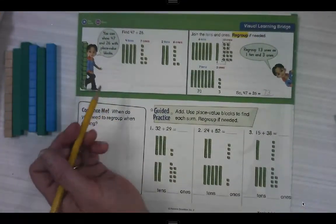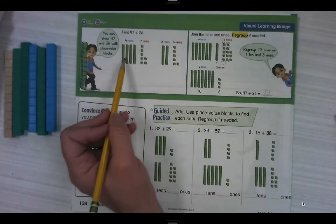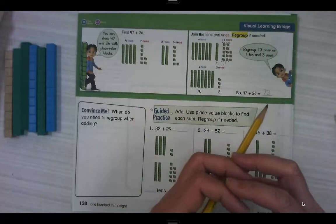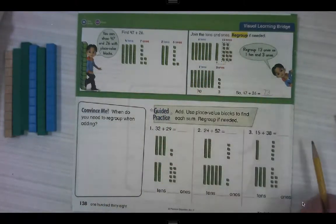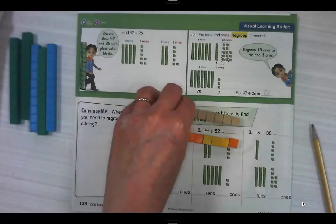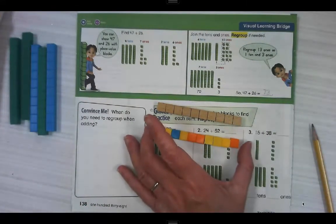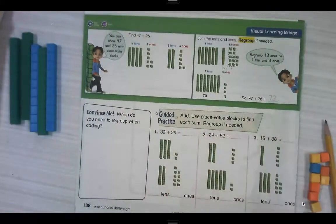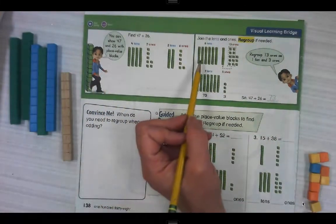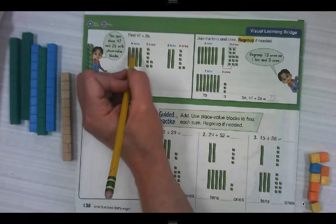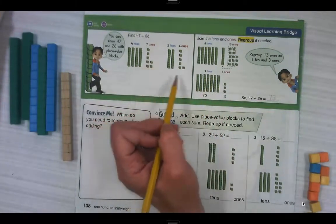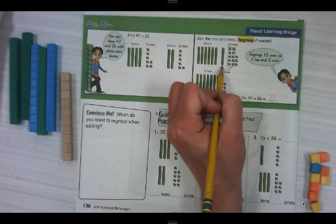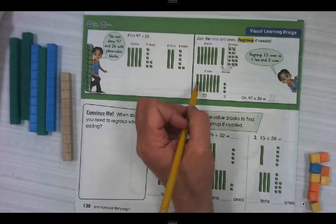You can show 47 and 26 with place value blocks. If we have this equation, four 10s, seven ones, and two 10s, six ones. Join the 10s because we're combining for addition and regroup if needed. That was where we switch things out for something that is equal. We can switch out 10 ones for one 10 and we can do it the other way. If we need to get some ones, we can trade a 10 and get ones. So here they have six 10s. So over here they had four 10s plus two more 10s made six, but they've got all these ones. So they put 10 of them in a circle and they moved them over here and made a 10. So all together they have seven 10s, three ones.